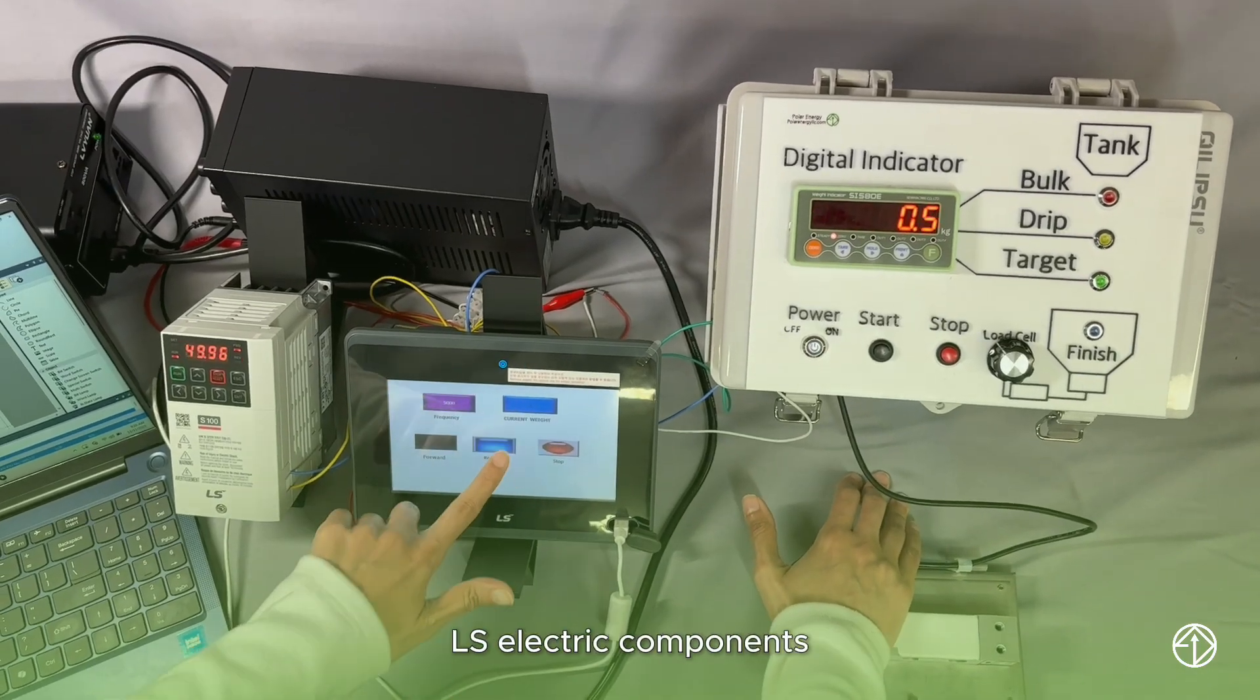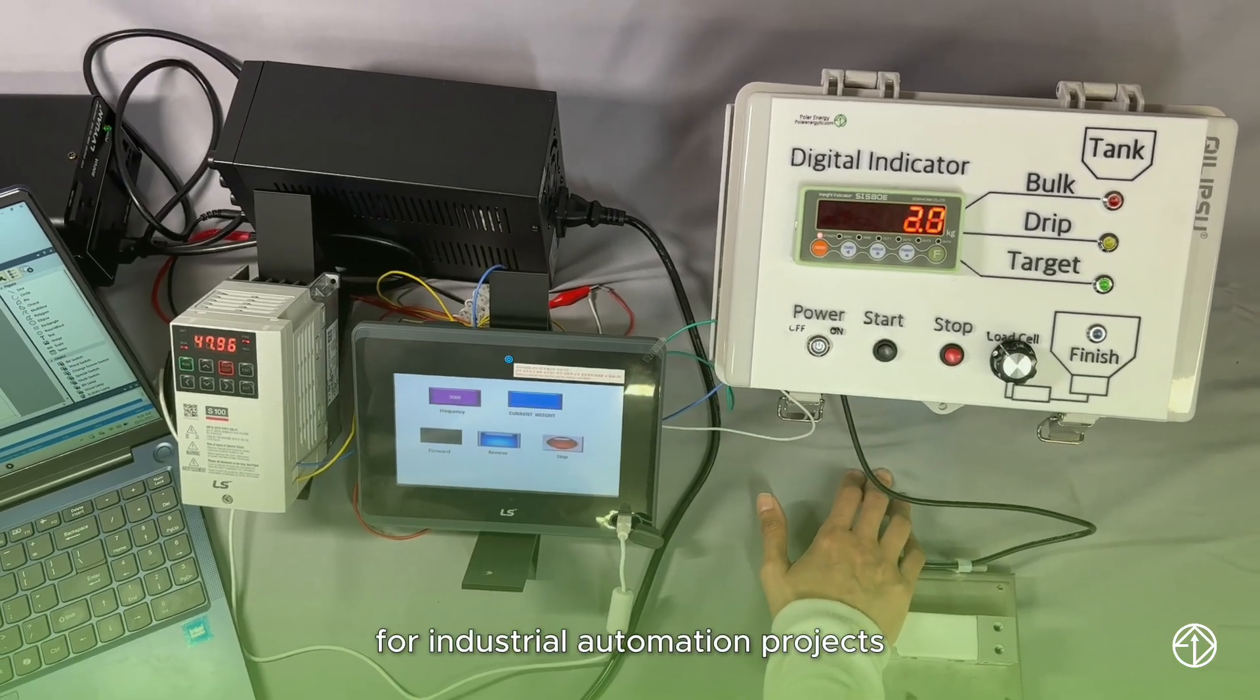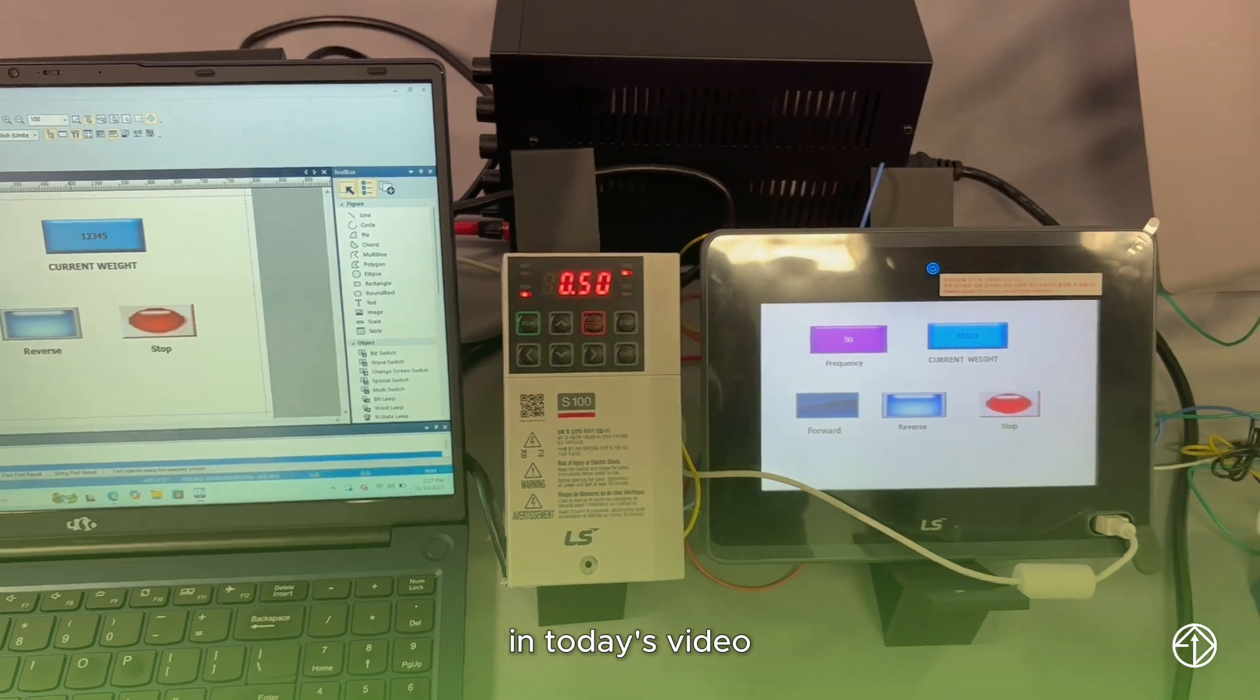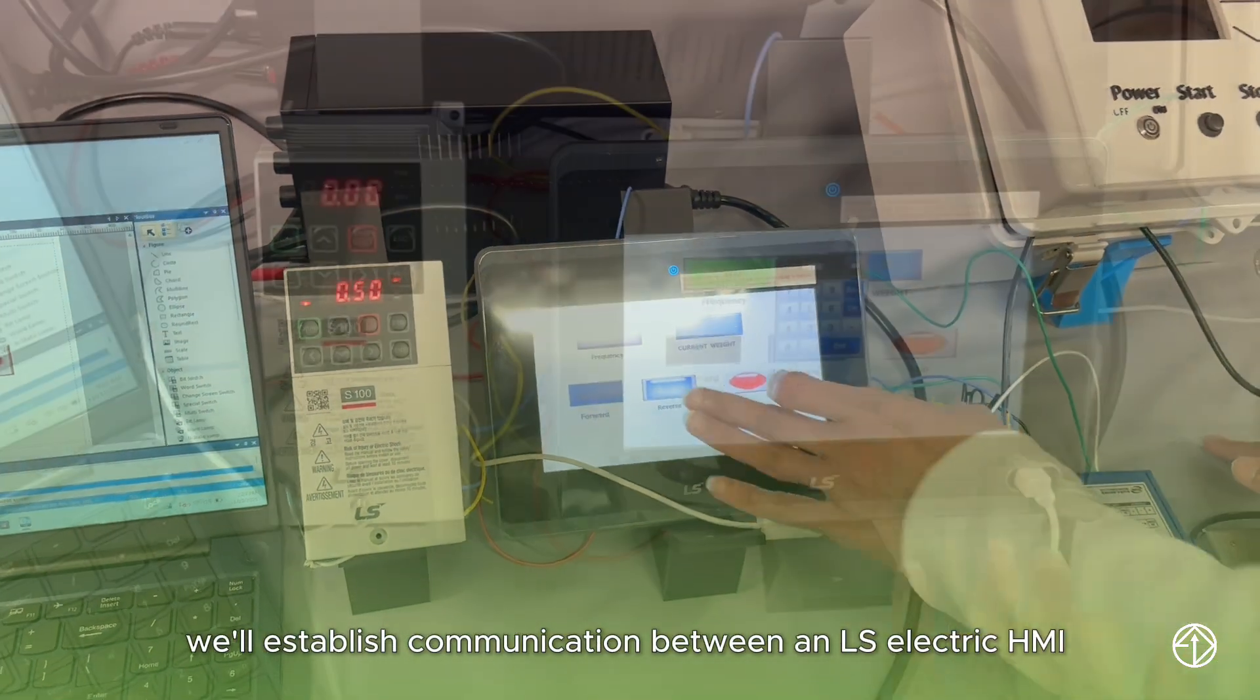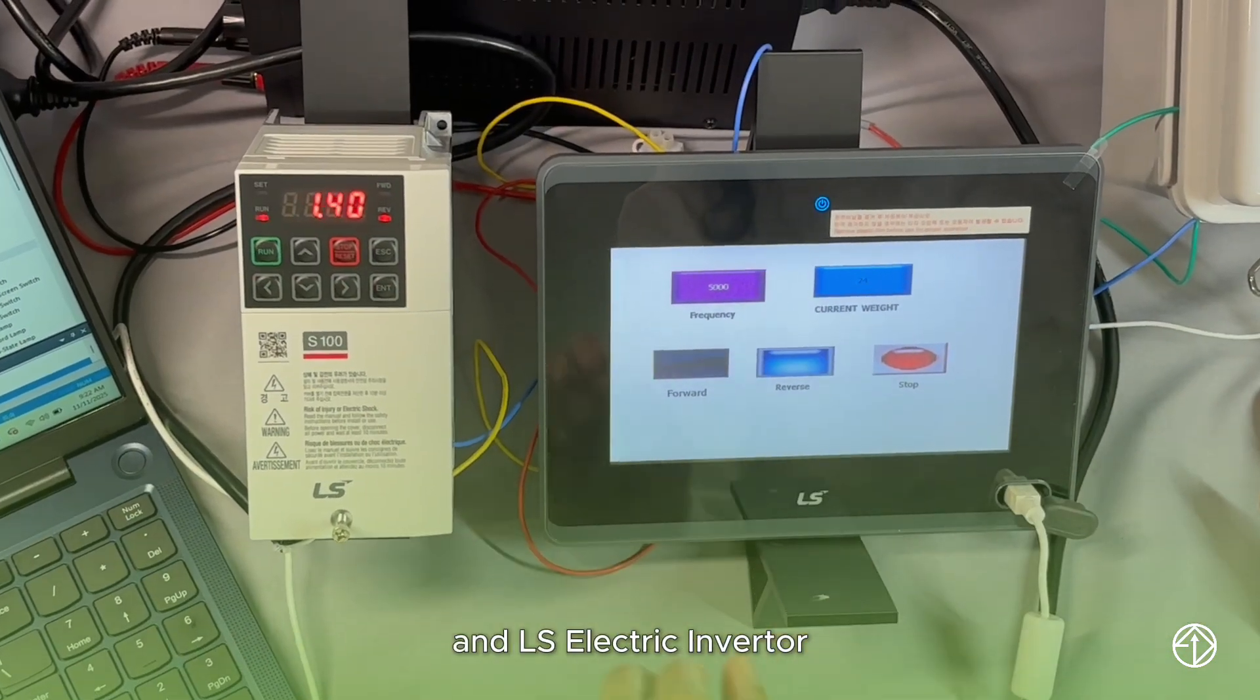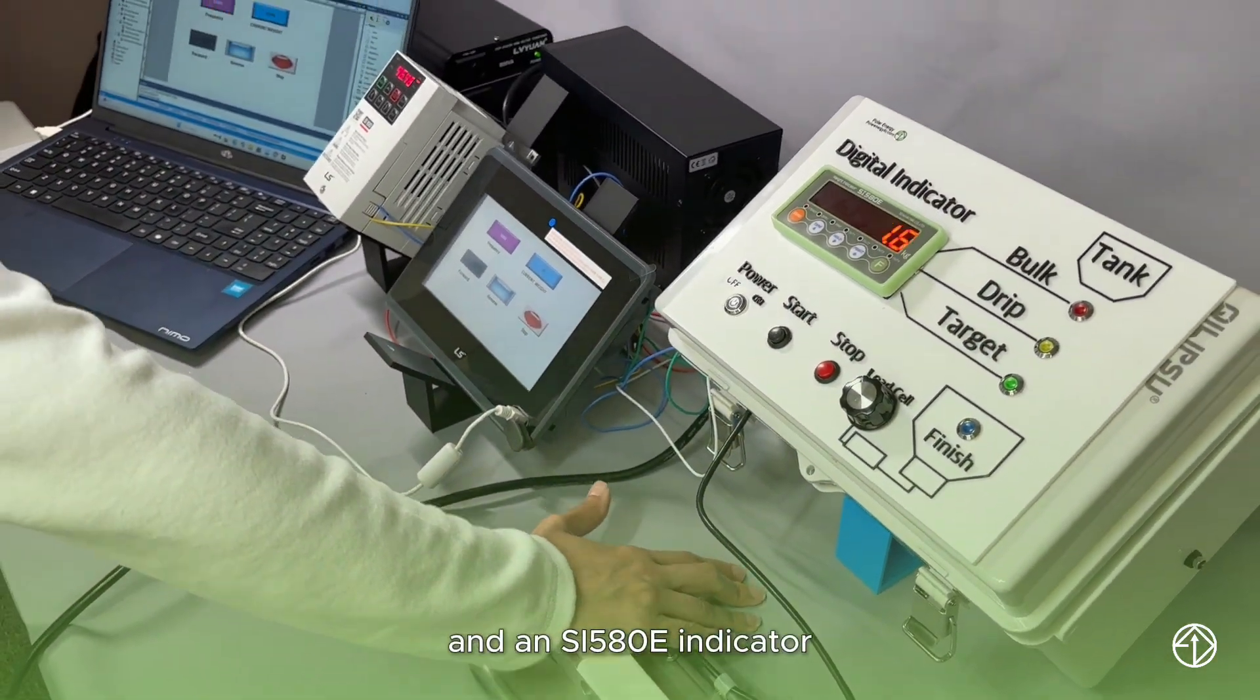We're working through networking LS electric components for industrial automation projects. In today's video, we'll establish communication between an LS electric HMI, an LS electric inverter, and an SI580E indicator.